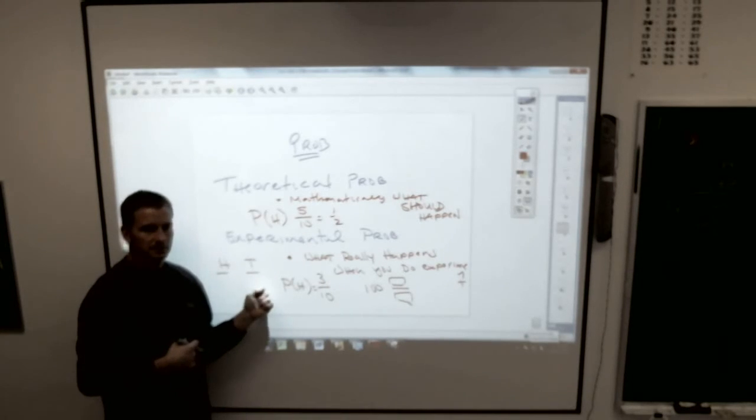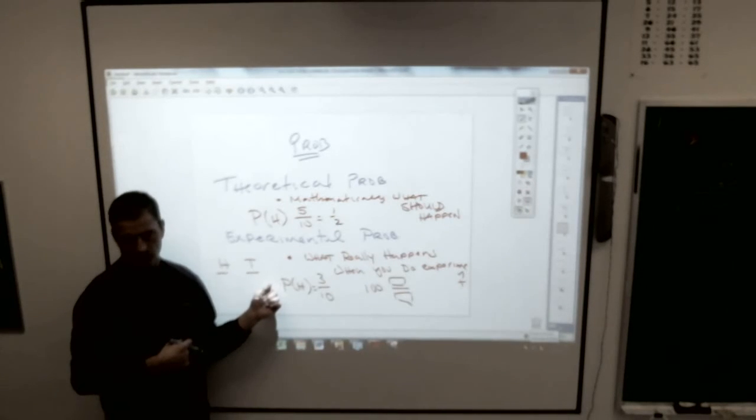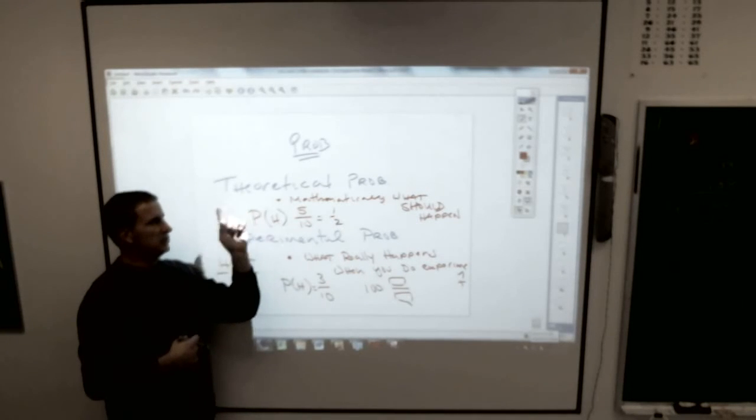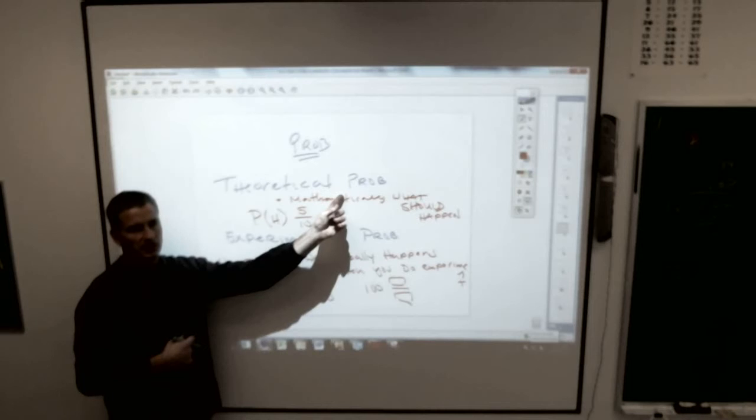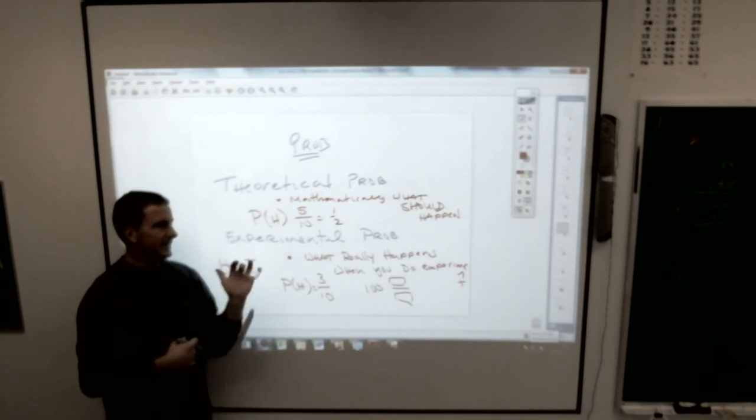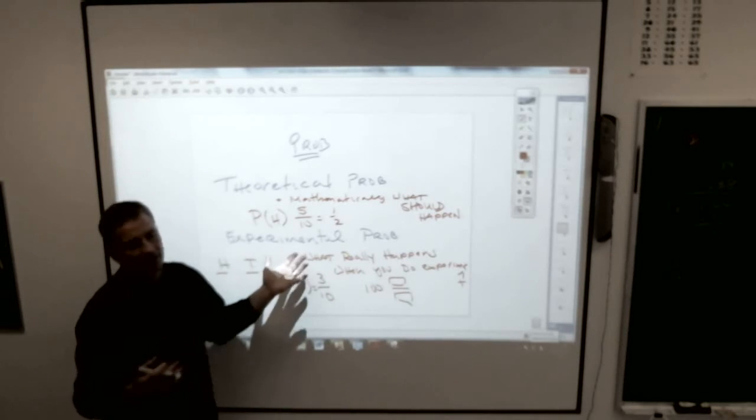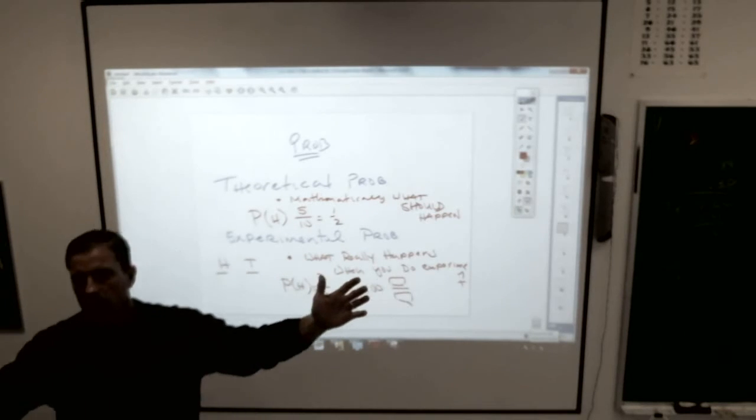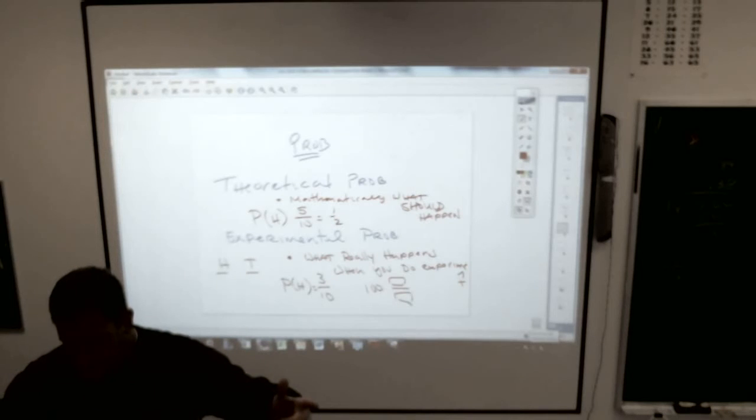How do you know that? Because that's the reason lotteries survive. That's the reason gambling boats survive. Those places know the theoretical probability of what they have to pay out to make money. Somebody's going to go in there and win a million. Will somebody win the million dollars? Yes.